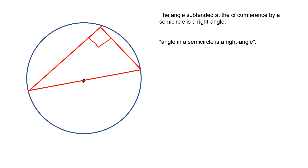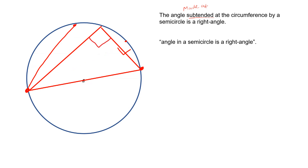Our next circle theorem is that the angle subtended — which just means made at or made by — at the circumference by a semicircle is a right angle. We also say the angle in the semicircle is a right angle. Basically, if you have a diameter and then join either end of the diameter to any point on the circumference, you will form 90 degrees.